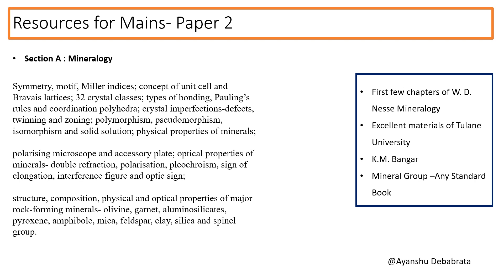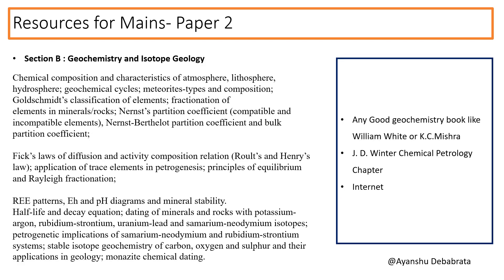Section B deals with geochemistry and isotope geology. For this you can follow any good geochemistry book like William White or Kasi Mishra. The chapterization differs but the content is more or less the same. I personally followed the geochemical petrology chapter in Jdu Inter, which covers most of these headings, and for any missing topic I simply searched online or found content in quality research papers from the internet.